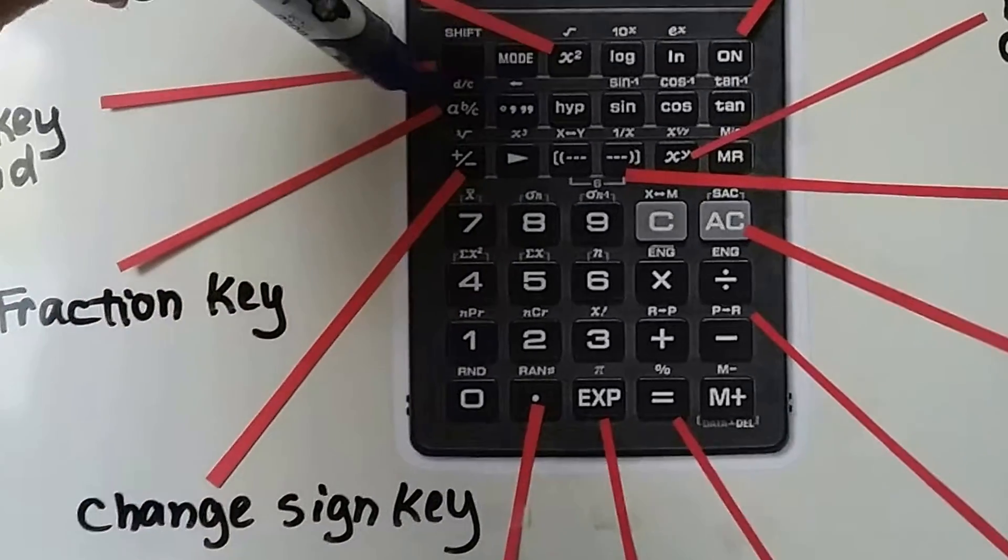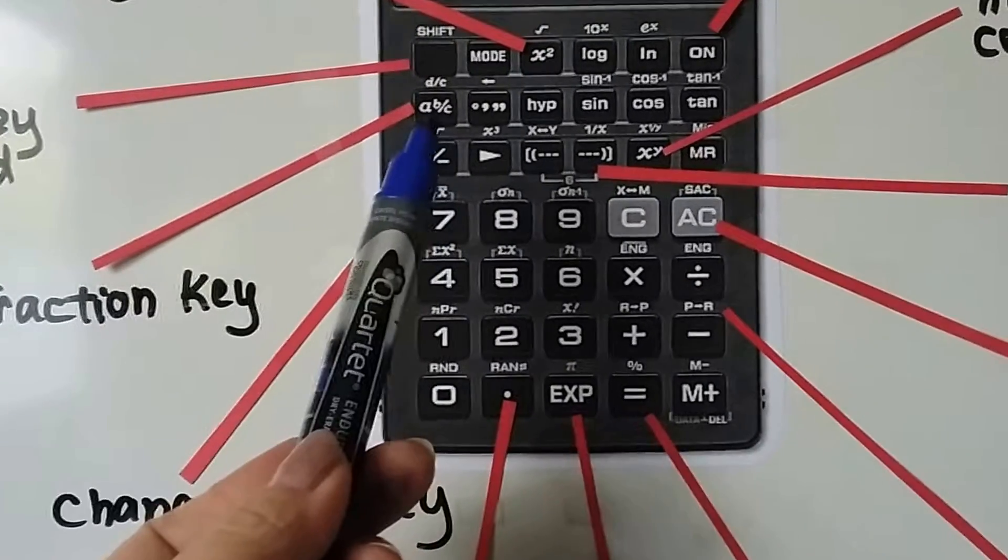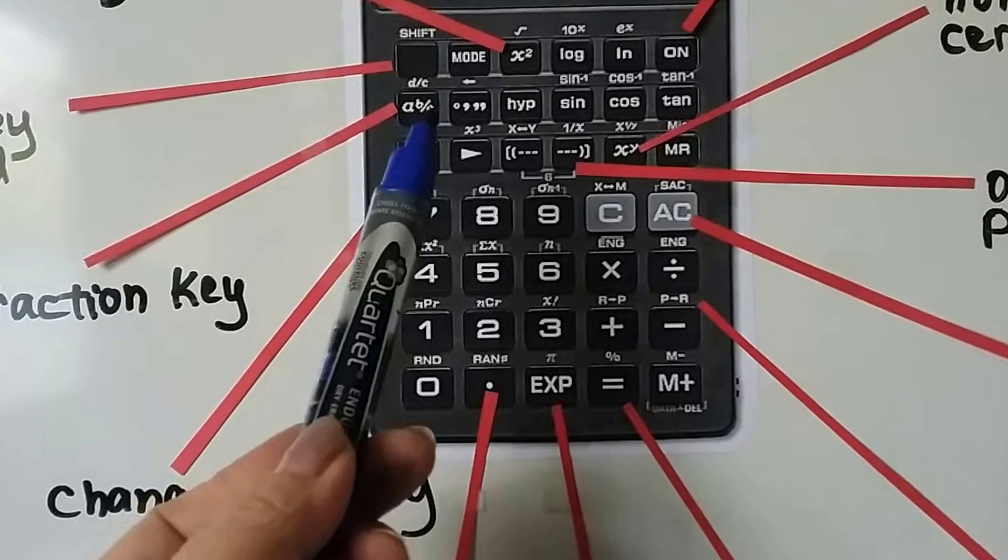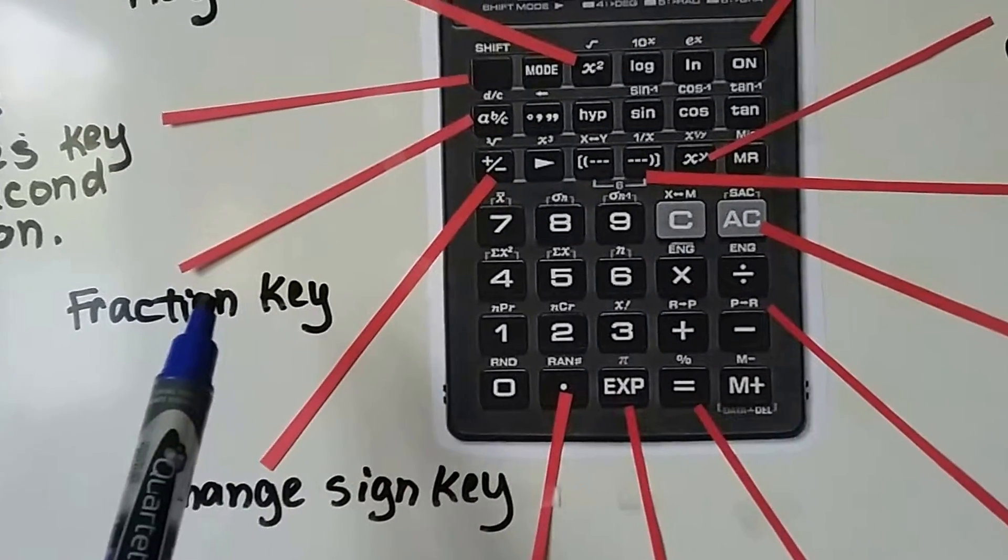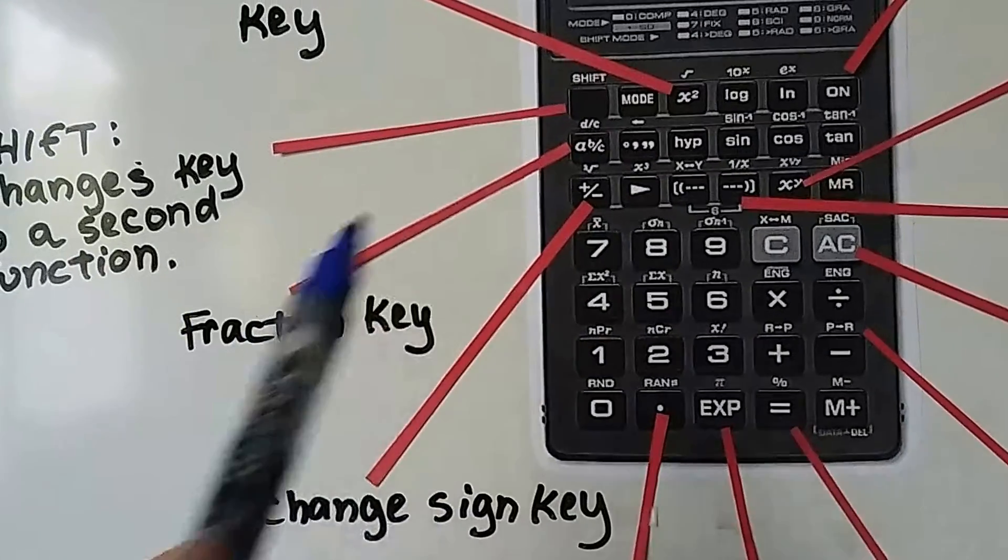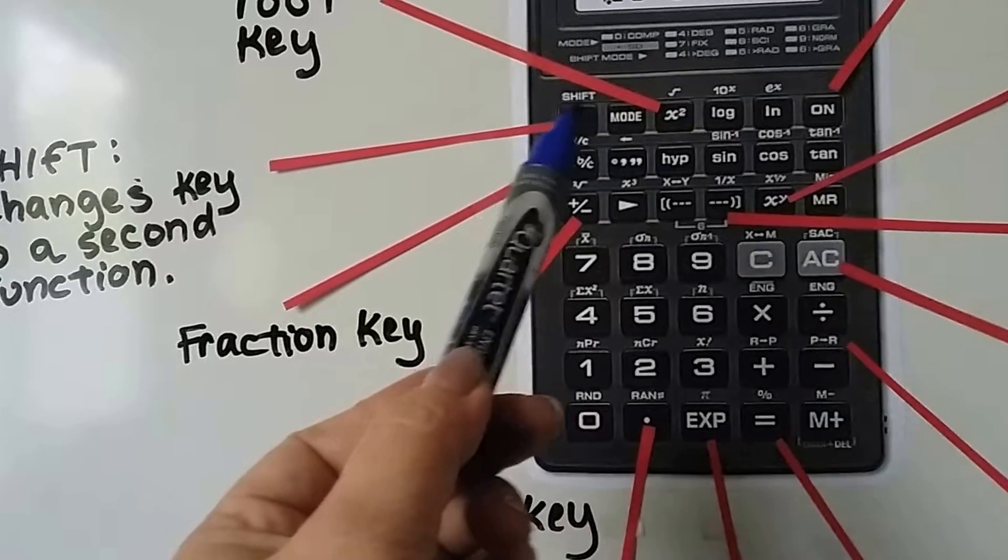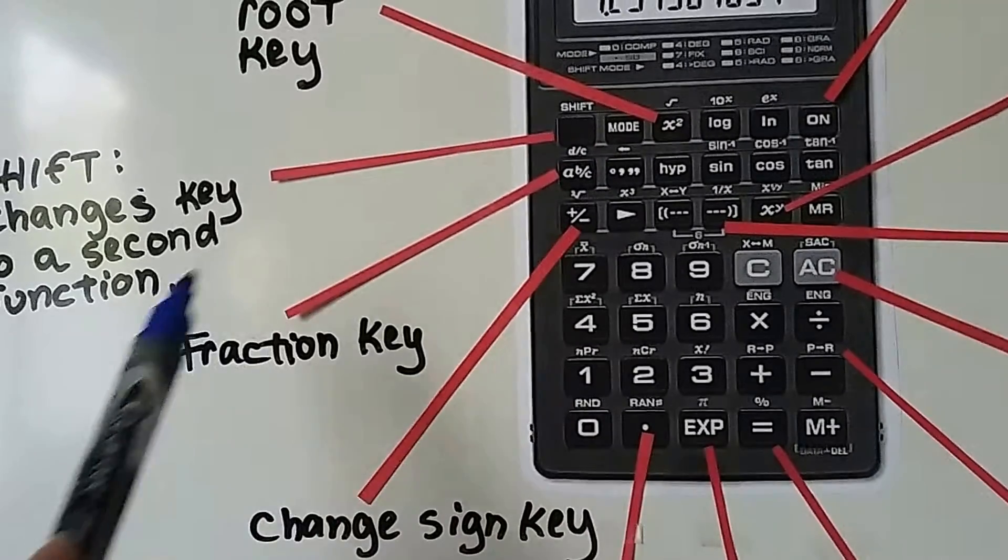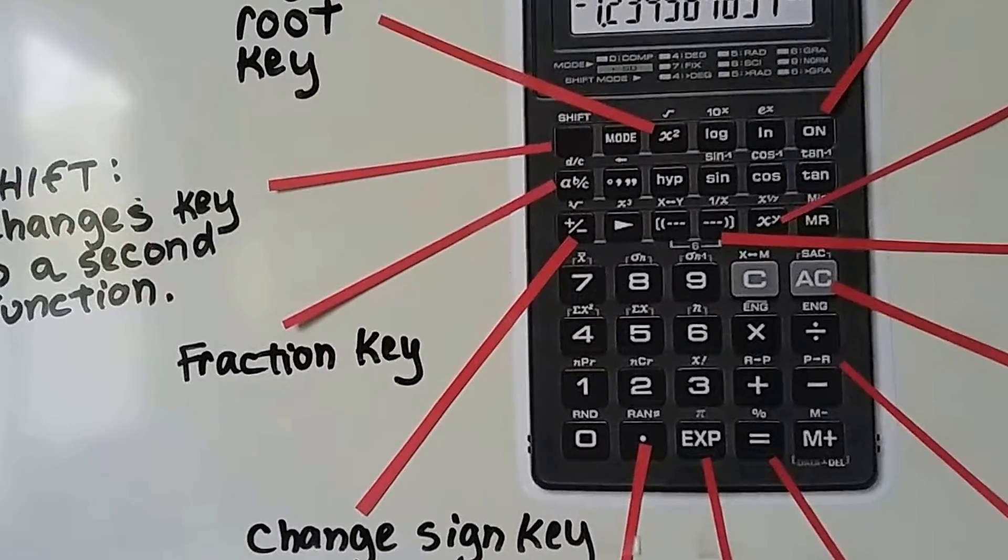If you look here, follow this red line, there's a little script A with a fraction B over a C. That's the fraction key. And there's a shift key right here. See it says shift up there? And that changes the key to a second function.